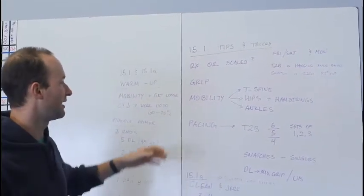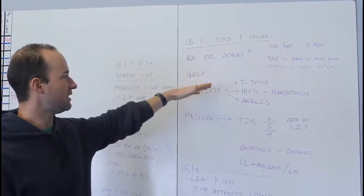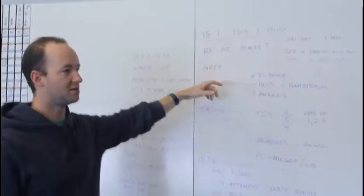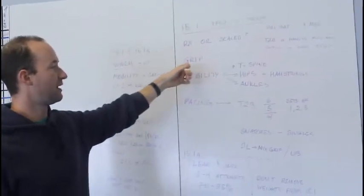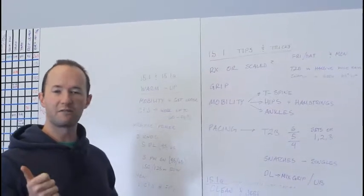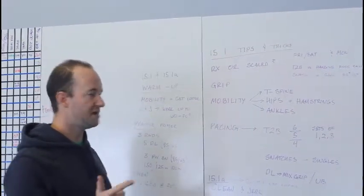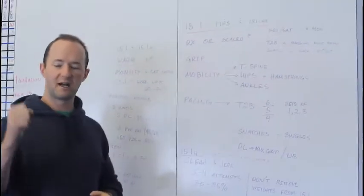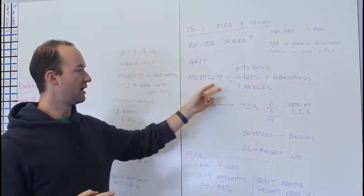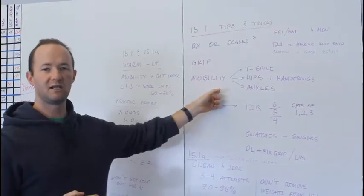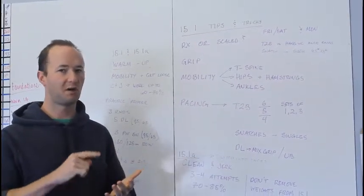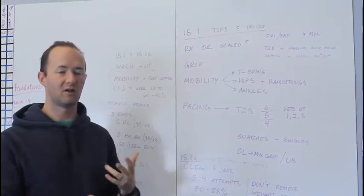So plan on maybe three attempts at getting a new one rep max during this workout. So again, for all that workout, do you go RX or scaled? I think the big decision is the weight and the toes to bar. Your grip is going to be a big function. So make sure that you're planning on dropping often for the toes to bar. Pacing yourself so that you're not death-gripping and you're relaxed. And then two, spending a lot of time on mobility so that you don't have that restriction when you're doing toes to bar or power snatches or even deadlift.